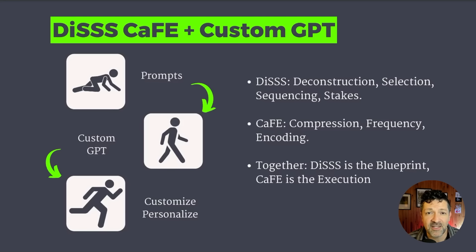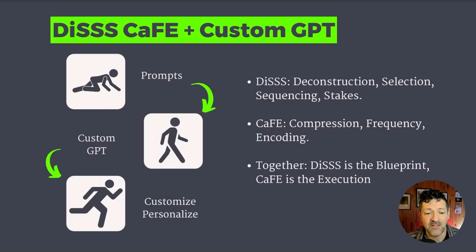I believe this process is a perfect candidate for something you can automate with AI, such as ChatGPT using custom GPTs, as well as Gemini. We're going to start today with some prompts you can use for each of these sections, then build a custom GPT out of a prompt sequence, and then get into how to customize and personalize this for your specific learning style.